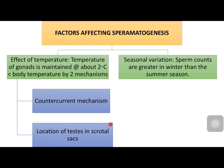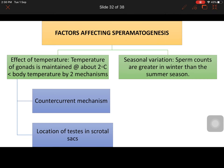The second mechanism is the location of the testis in scrotal sacs outside the abdomen, which maintains the temperature around the testis at about two degrees Celsius less than core body temperature. That is all about the regulation of spermatogenesis and factors affecting spermatogenesis.